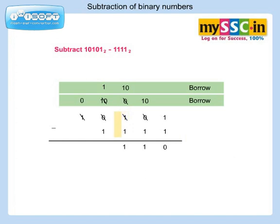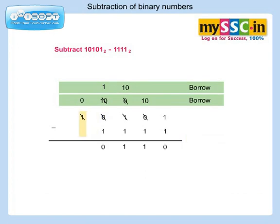Let's move to the next column: 1 minus 1 is equal to 0. Let's move to the next left column and 0 is carried down as it is. Thus the answer is 10101 base 2 minus 1111 base 2 is equal to 110 base 2.